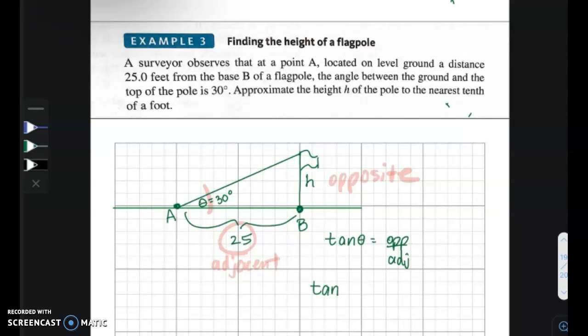We're going to say tangent of the angle 30 equals the opposite side, h, divided by the adjacent side, 25.